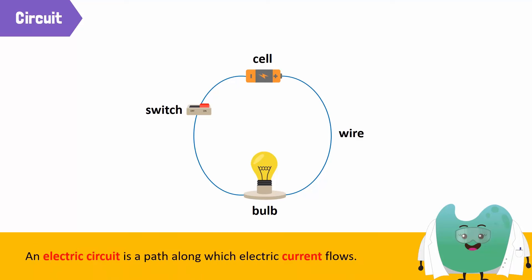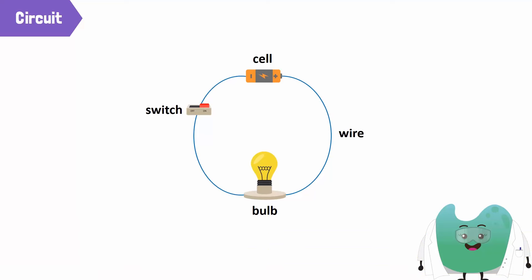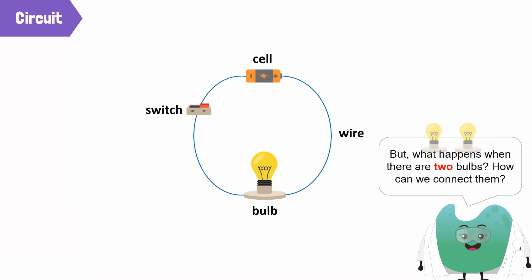An electric circuit is a path along which electric current flows. A simple circuit has a cell, a bulb, and a switch connected by wires. But what happens when there are two bulbs? How can we connect them?